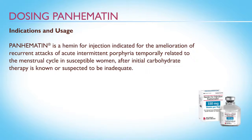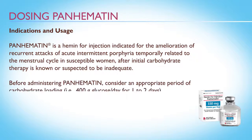Panhematin is a hemin for injection indicated for the amelioration of recurrent attacks of acute intermittent porphyria temporally related to the menstrual cycle in susceptible women after initial carbohydrate therapy is known or suspected to be inadequate. Before administering Panhematin, consider an appropriate period of carbohydrate loading — that is, 400 grams of glucose per day for one to two days.